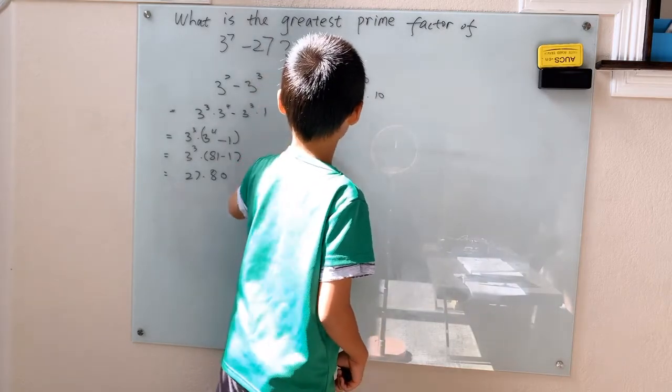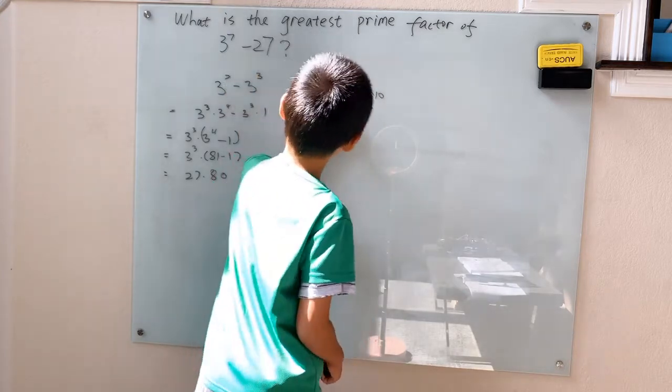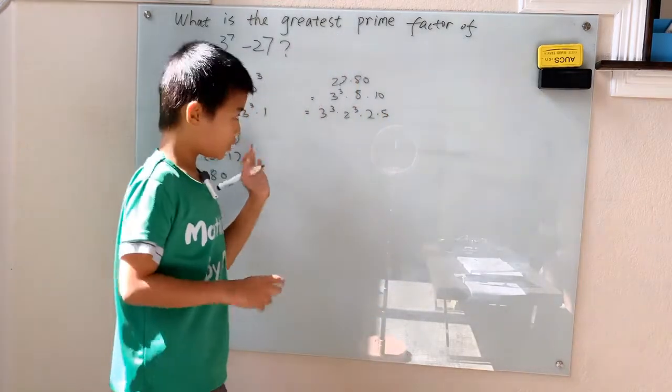Oh, that's 3. 8 is 2 cubed, and 10 is 2 times 5. And we don't need to simplify this down any further.